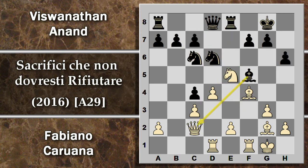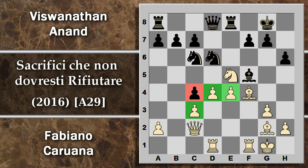Anand però gioca più sul sicuro: cavallo D6, il cavallo non è in pericolo e difende l'alfiere. In qualche modo il bianco quindi deve reagire. Porta avanti questo pedone e si ritrova con questo forte centro. Ricordiamoci sempre che il nero ha un pedone in più ancora: anche se posizionalmente il bianco sta meglio, il nero ha un compenso materiale. L'alfiere si ritira mantenendo questa inchiodatura.